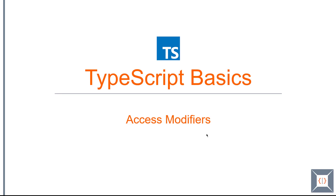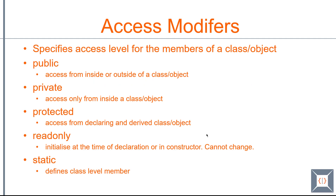Hello, welcome to TypeScript basics. In this part we are going to look at access modifiers. Access modifiers basically define the level of access for the members of a class or object. There are five different access modifiers available in TypeScript.